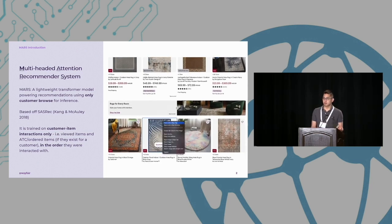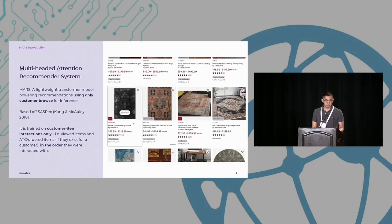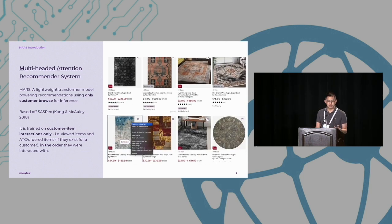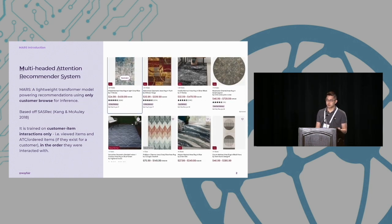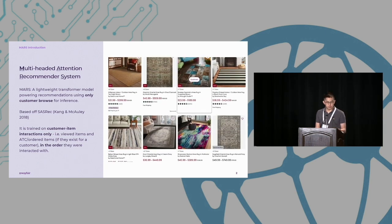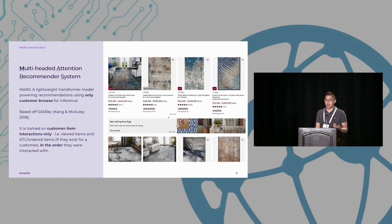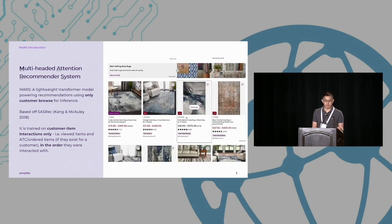Initially I'm seeing these default recs, which are basically just best sellers because I have no browsing history. And as I generate some page views, I'm going to click on these kind of blue abstract art rugs, which I like. And after I've clicked on a few of these, I can refresh the page, and you can see that the resulting recommendations are much more stylistically consistent with this kind of abstract blue art theme that I said I liked.